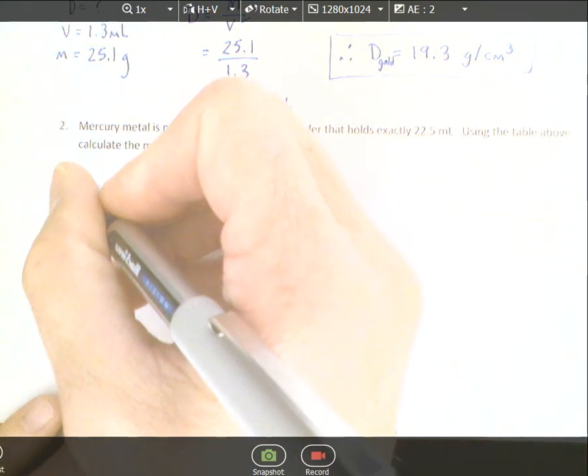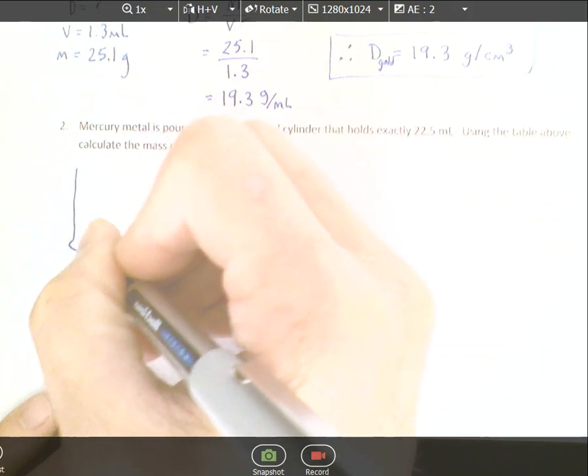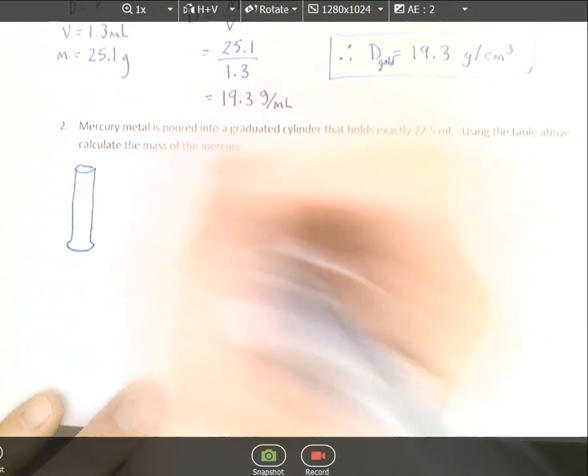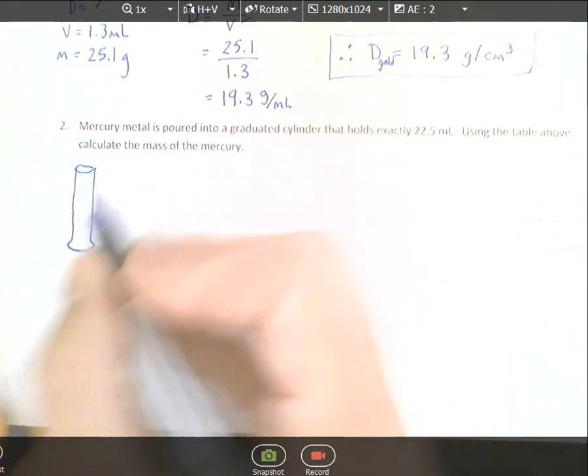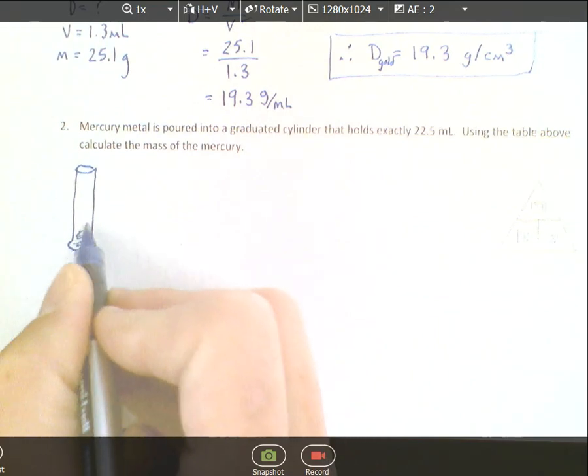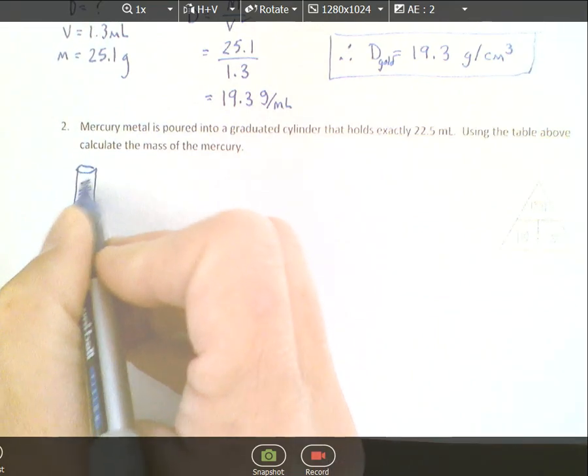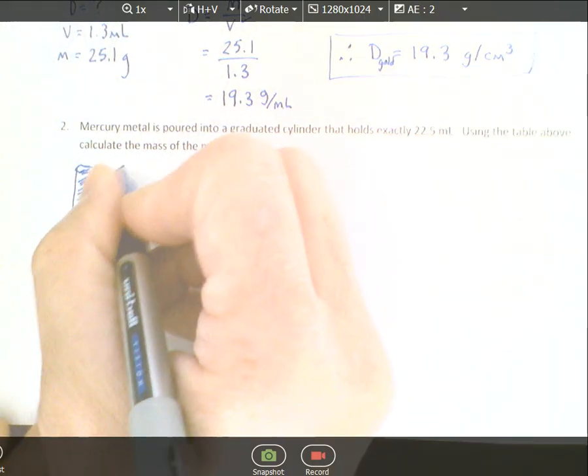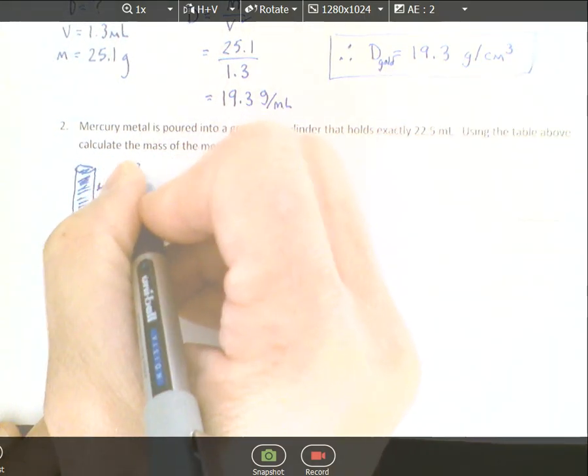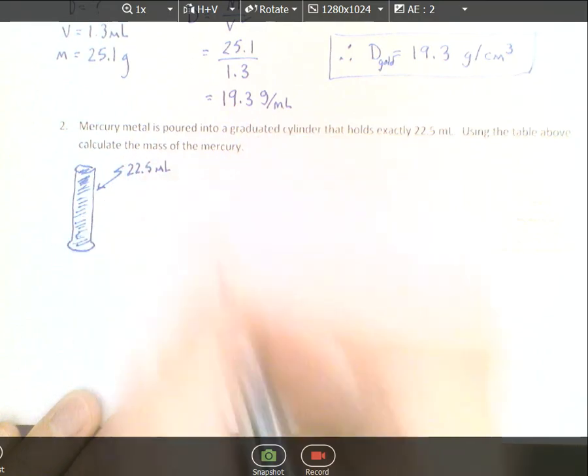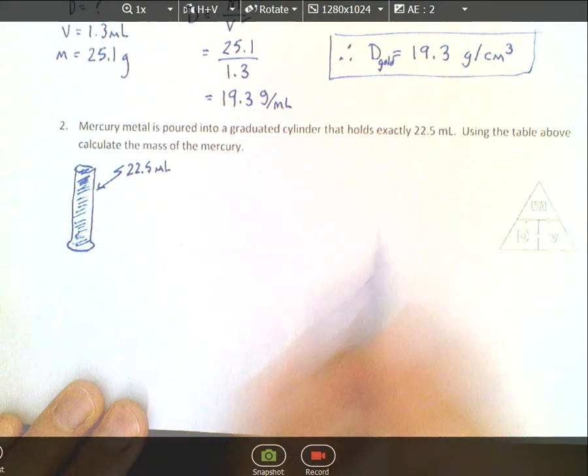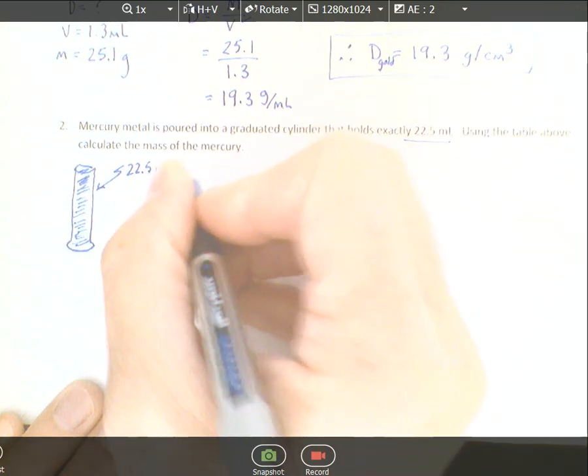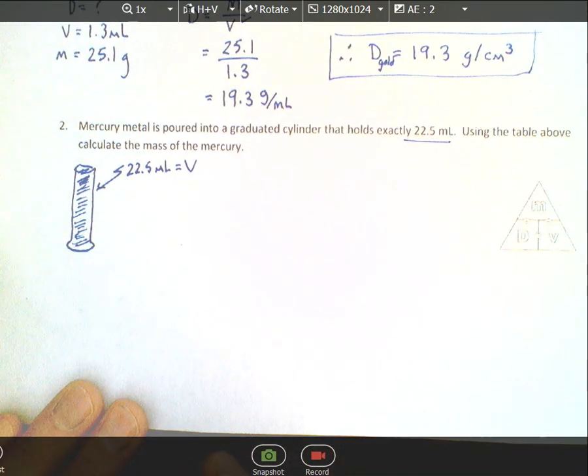In this case, we have a graduated cylinder that holds exactly 22.5 milliliters. They take the mercury and fill it up all the way to the top. The mercury pours in and this holds exactly 22.5 milliliters. Clearly, that 22.5 milliliters is the volume of the mercury.